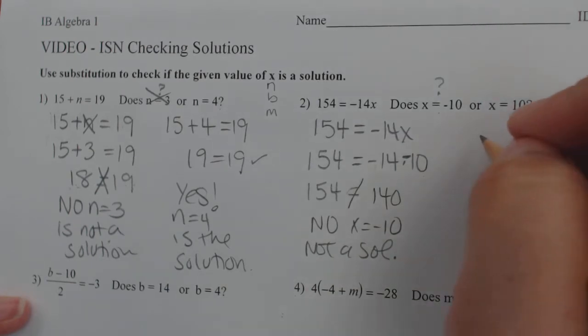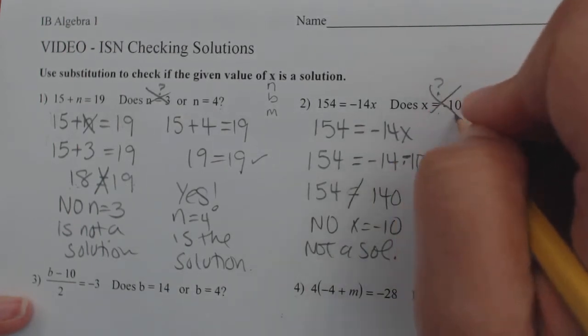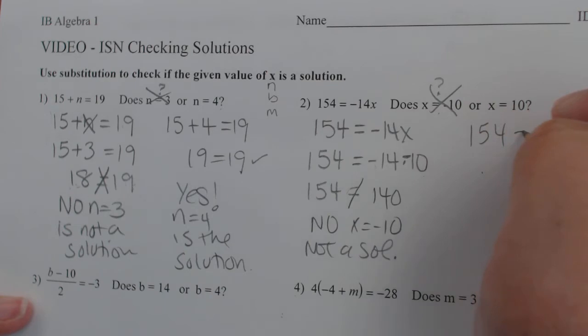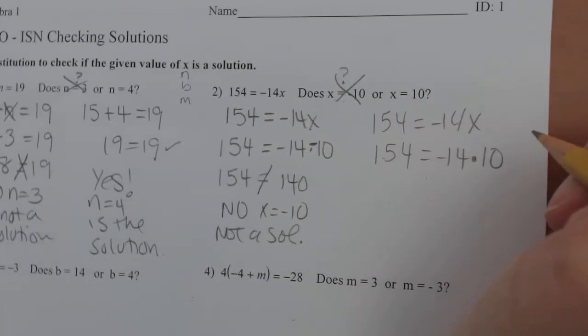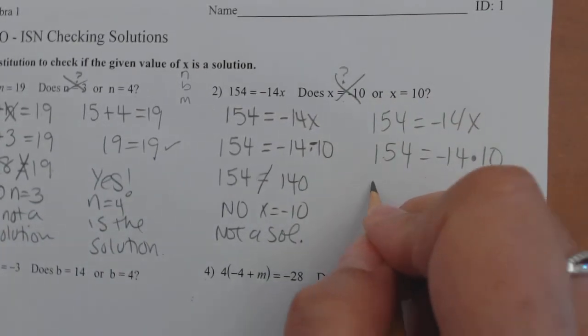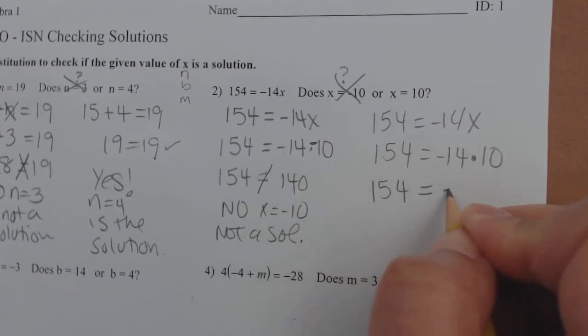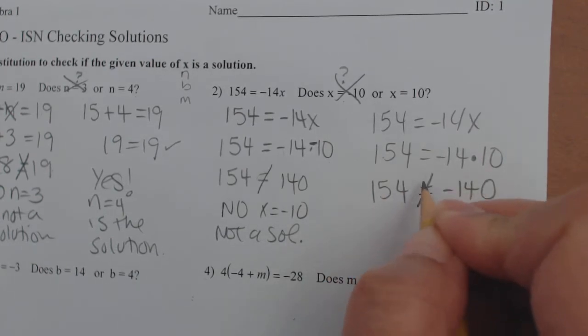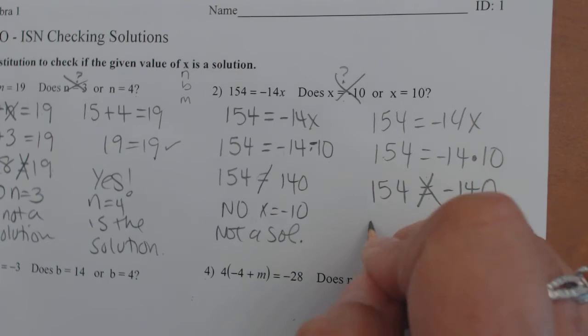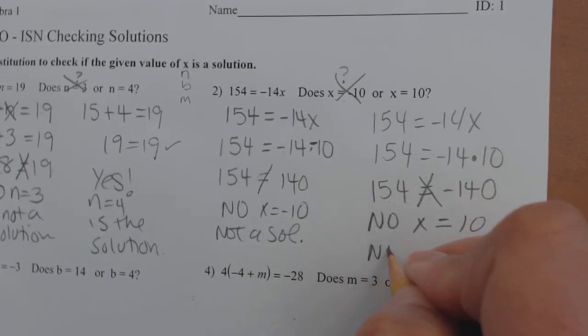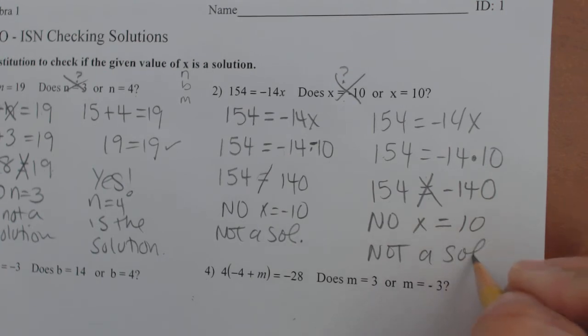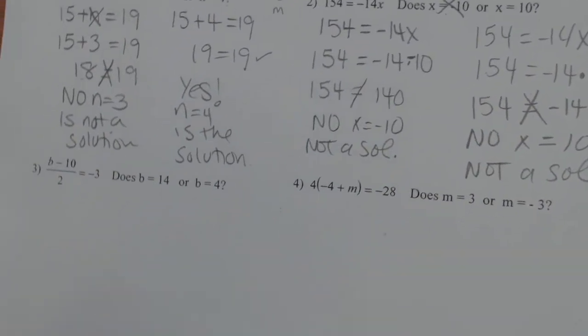I'm going to do sol for solution. Let's try the next one. 154 equals negative 14x. We want to try positive 10. 154 equals negative 14 times positive 10. 154 equals negative 140. Oh, look, that doesn't work either. So neither one is. So no, x equals 10, not a solution as well.